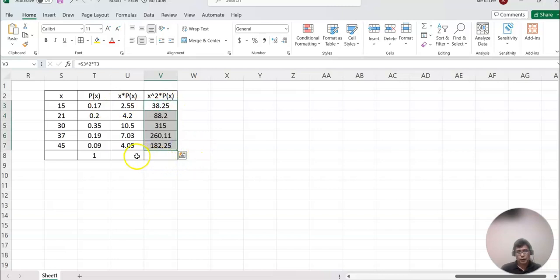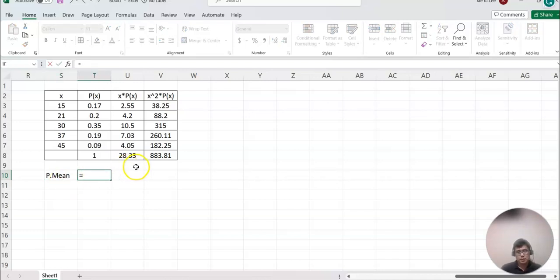Don't forget to find the total for these two columns as well. Then now, what's the mean value here? Yes, exactly. This means x times P(x), the total sum here. That's our mean value.